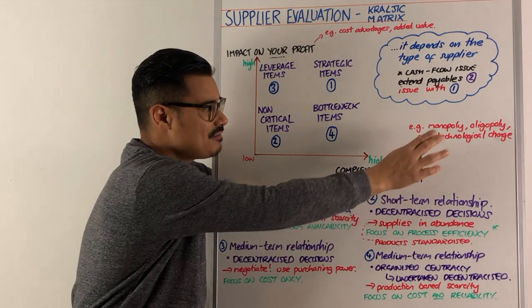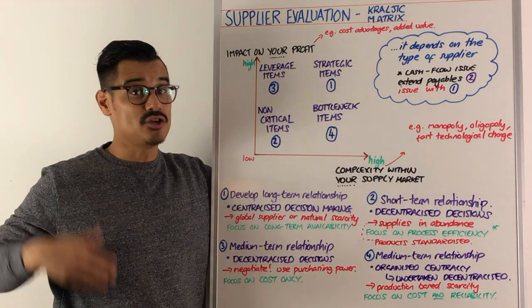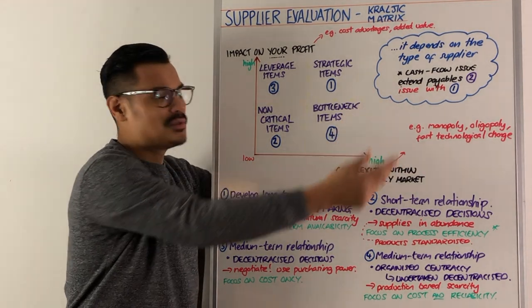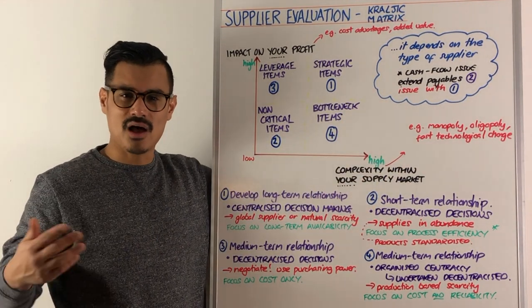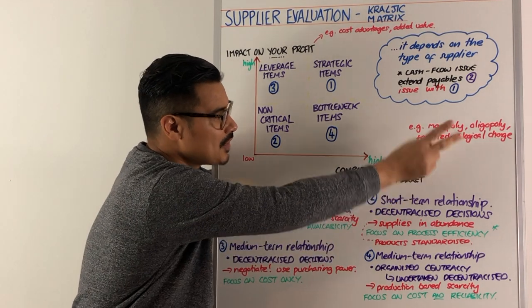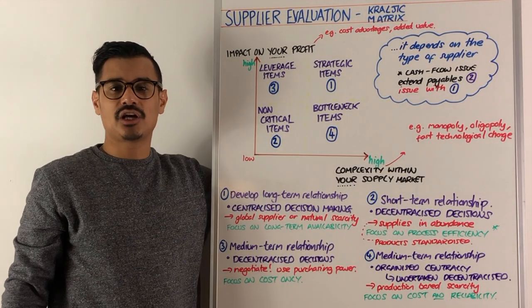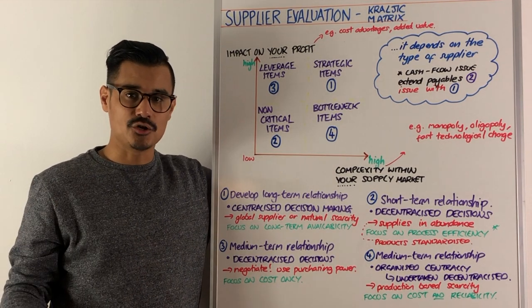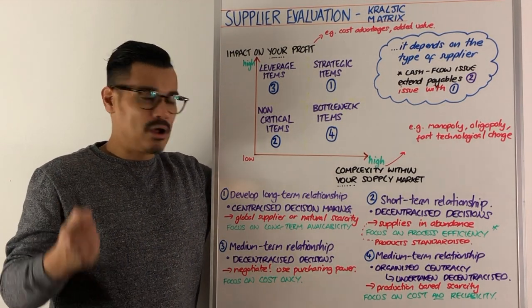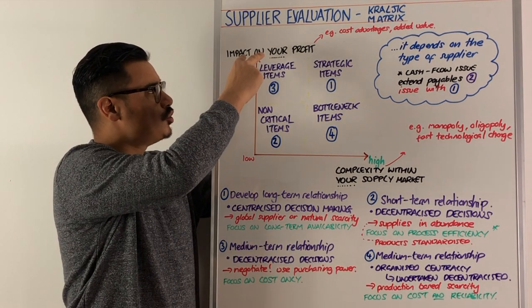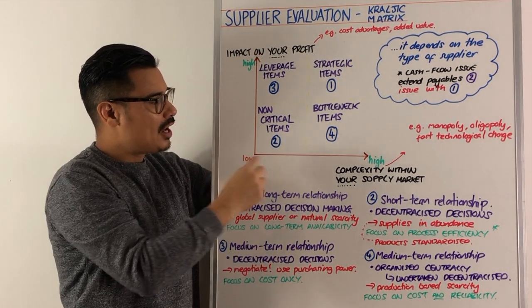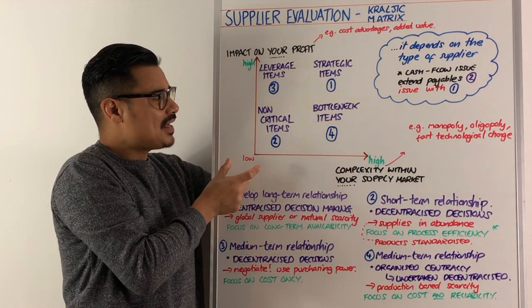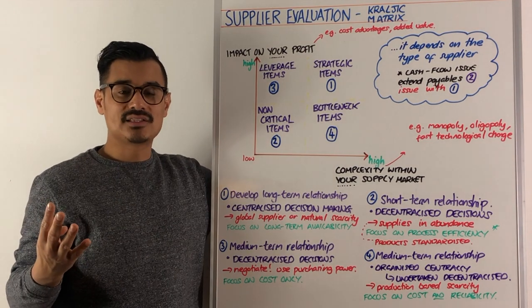Is the market very complex — perhaps because it's a monopoly, which you could relate back to Porter's Five Forces since you don't have much bargaining power? Is it an oligopoly or potentially a duopoly, as we've seen with Airbus and Boeing in the aeroplane-making market? Or is there fast technological change, moving so swiftly you can't keep up? So Kraljic split suppliers by whether the impact on your profit is high or low, and whether the complexity of the supplier's market is high or low, giving four quadrants in the matrix.